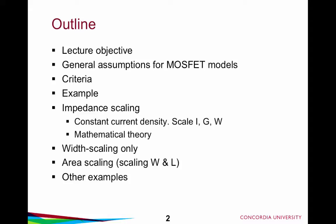This is what we'll call constant current density scaling, meaning that when we modify a design, we're going to increase or decrease the bias currents, the conductances, and the widths of the transistors together. This will be based on a certain amount of mathematical rigor. Then we'll talk about width-only scaling — what happens if we leave currents unchanged but increase or decrease transistor widths — and then area scaling, where we scale the width and the length together. We'll look at some examples, time permitting.